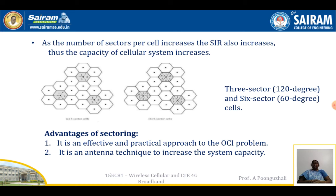As the number of sectors per cell increases, each cell can be configured as a 3-sector cell or a 6-sector cell. In a 3-sector configuration, each cell is divided into 3 sub-sectors. In a 6-sector configuration, each sector covers 60 degrees, allowing more users. As the number of sectors per cell increases, the SIR increases and the capacity of the cellular system also increases.